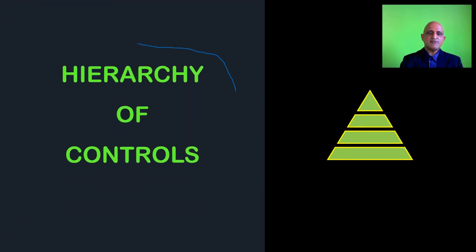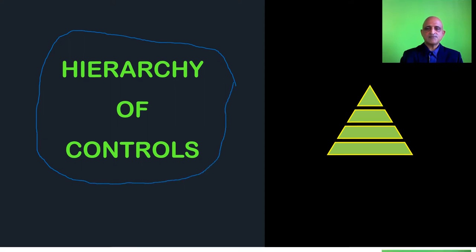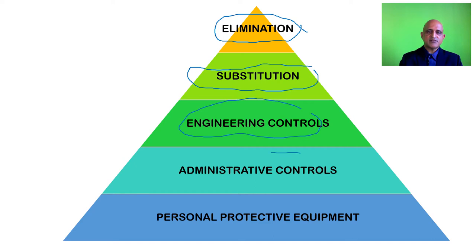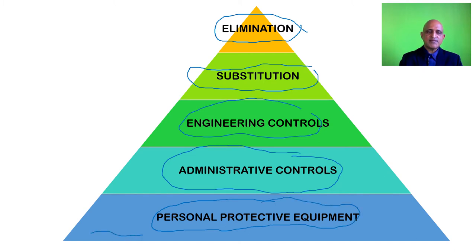We will look at the five controls and their hierarchy. The five controls are: elimination, substitution, engineering controls, administrative controls, and personal protective equipment. Personal protective equipment provides the last line of defense against the biological agent, which is why it is placed at the bottom of this hierarchy.